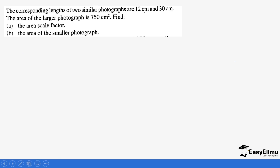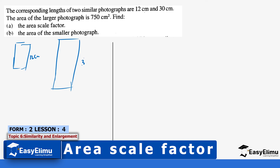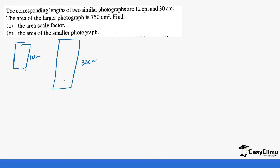Finally, let's do one last question. The corresponding lengths of two photographs are 12 centimeters and 30 centimeters. The area of the large photograph is 750 cm². Find the area scale factor. To get the area scale factor we need the linear scale factor first, and then square it. The linear scale factor is found by dividing the length of the larger photograph over the length of the smaller photograph.